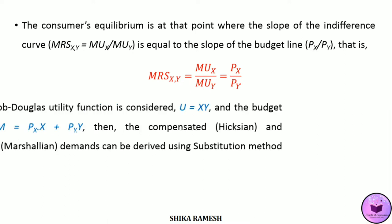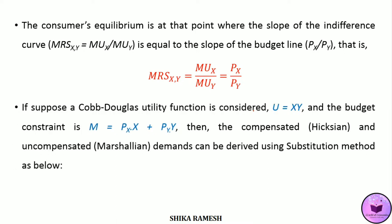Suppose a Cobb-Douglas utility function is considered, that is u is equal to xy, and the budget constraint is m is equal to price of x multiplied by x plus price of y multiplied by y. Then the compensated and uncompensated demand functions can be derived using the substitution method as well as the Lagrangian multiplier.